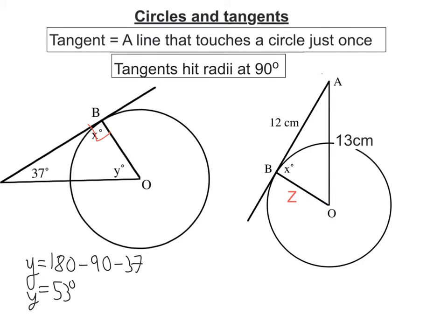Likewise, because we've got a tangent here and a radius, they hit at right angles. So I have a right-angle triangle, and I can now work out what z is using Pythagoras.